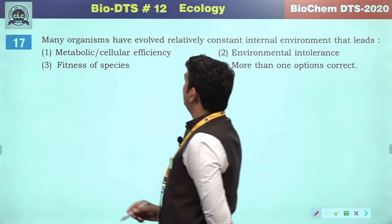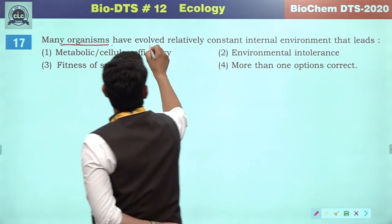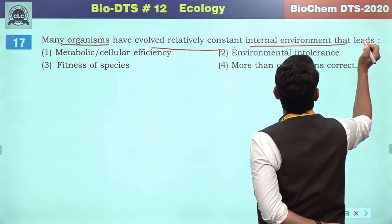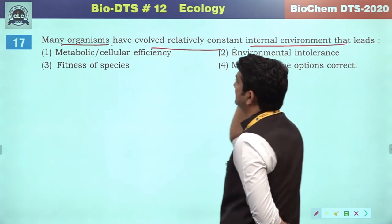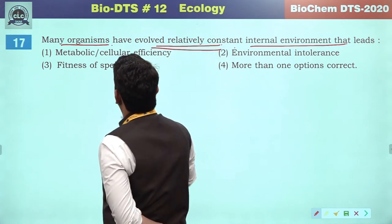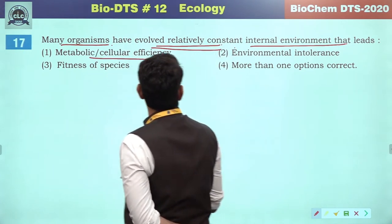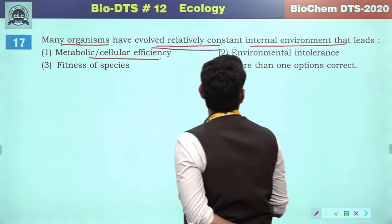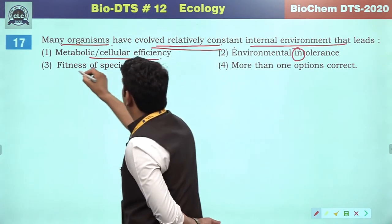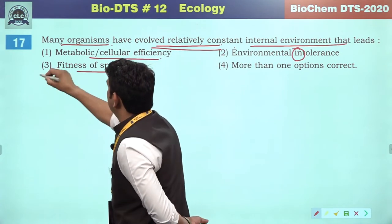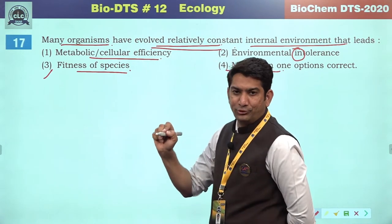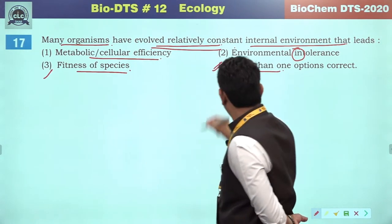Many organisms have evolved a relatively constant internal environment. If metabolic cellular efficiency is maintained, environmental tolerance will increase. Fitness of species will also increase. So there will be more than one correct option — the correct answer is option 4.